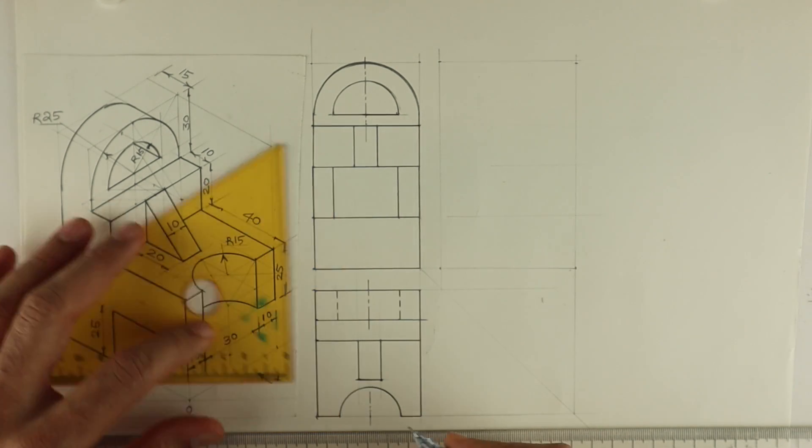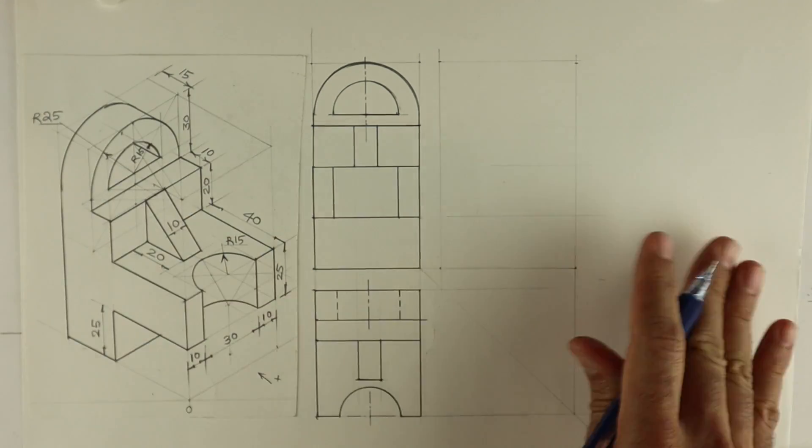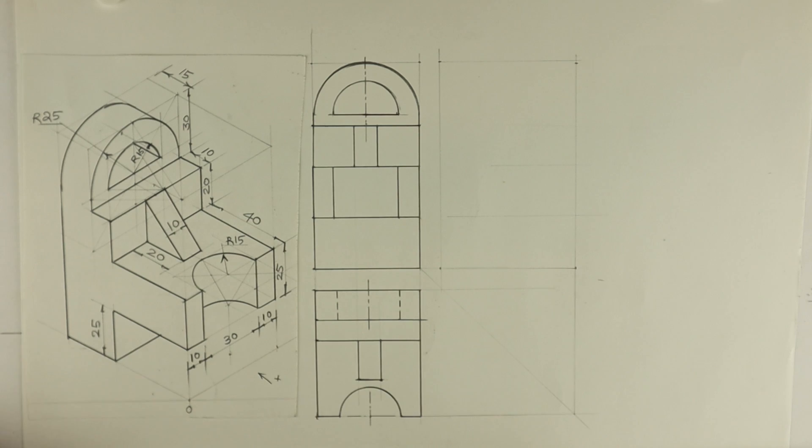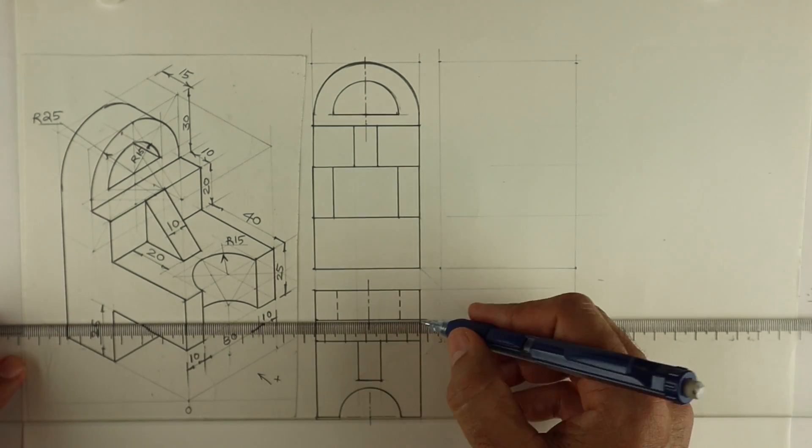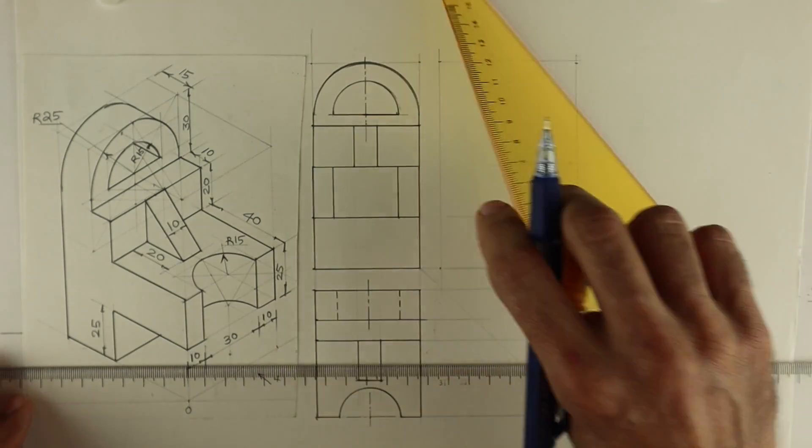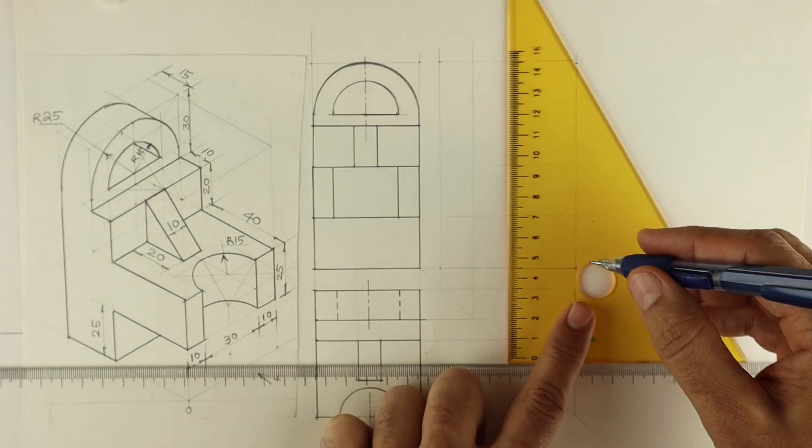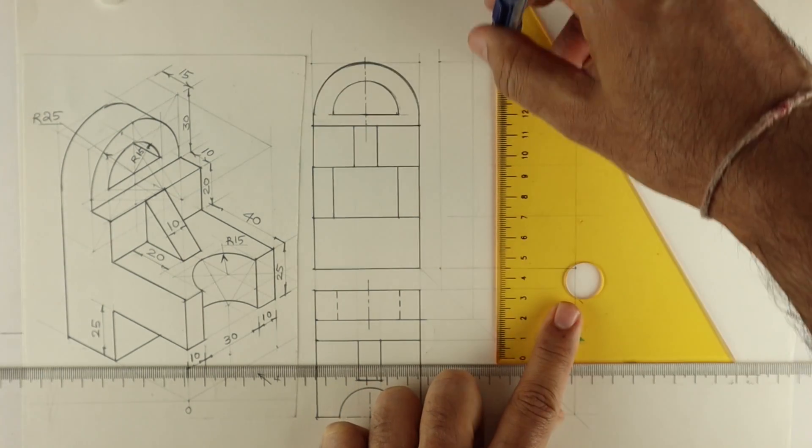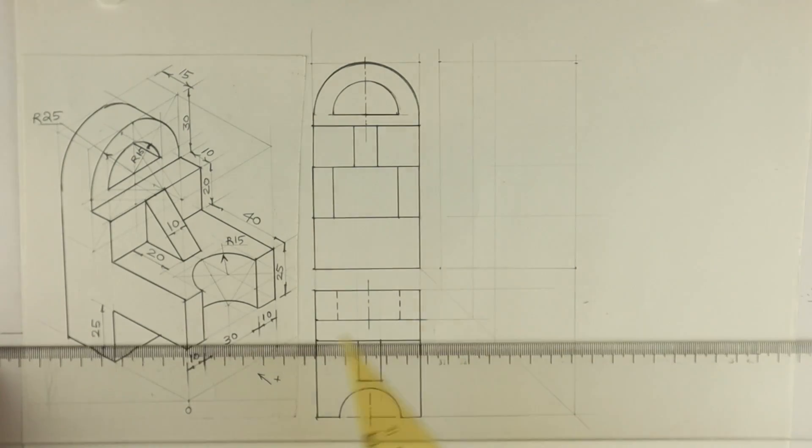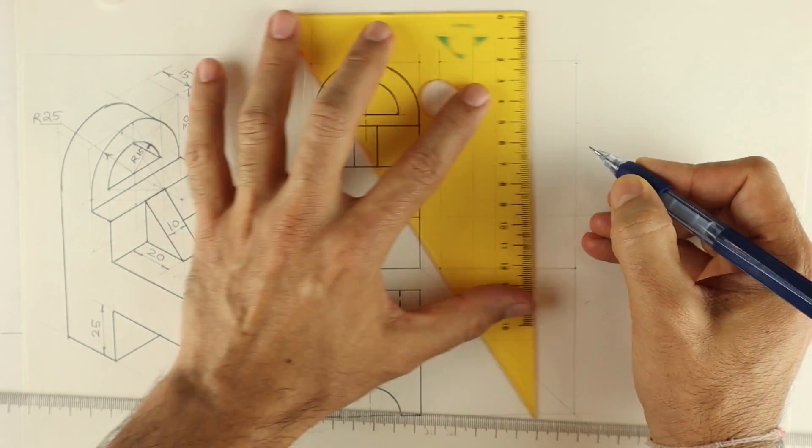This is axis. Now we'll see side view. In side view you will start from here. This height is 15. This is that 25. So now first we'll start with this. See, this part, so from top 15.